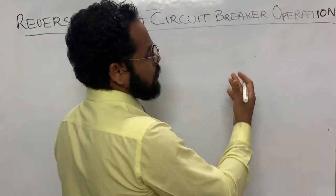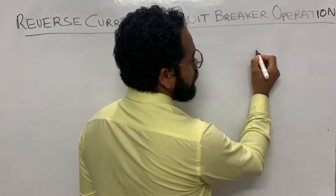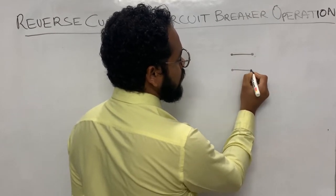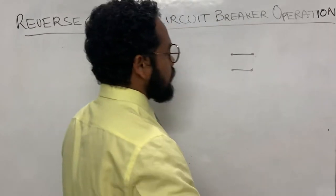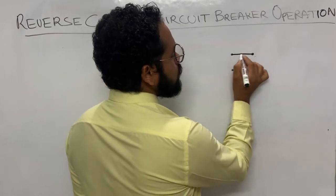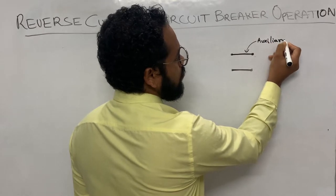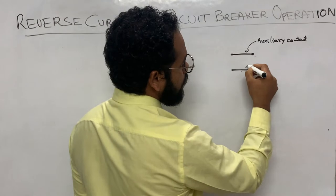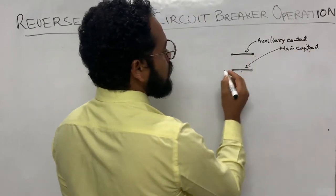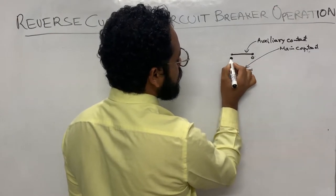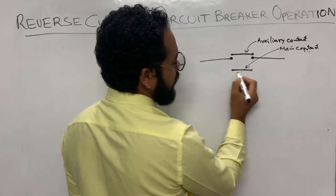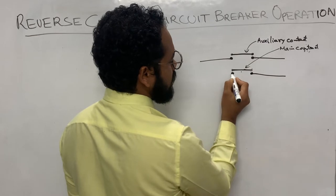The reverse current circuit breaker I am going to explain consists of two contacts: one is called the auxiliary contact and the other one is called the main contact. These contacts are connected in a circuit — suppose these are two contact points connected by means of a contact, and likewise there is another contact point connected in another circuit.